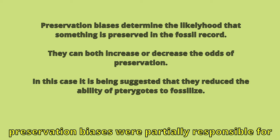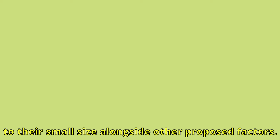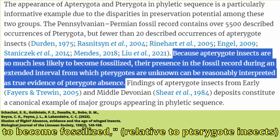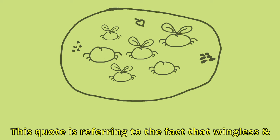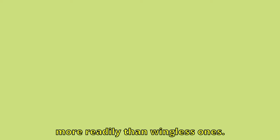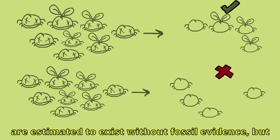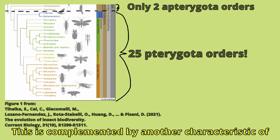For example, it was suggested that preservation biases were partially responsible for the time gap, with winged insects not preserving well due to their small size alongside other proposed factors. However, a quote from the paper suggests otherwise: 'Because Apterygote insects are so much less likely to become fossilized relative to Pterygote insects, their presence in the fossil record during an extended interval from which Pterygotes are unknown can be reasonably interpreted as true evidence of Pterygote absence.' This quote refers to the fact that wingless and winged insects are found preserved in the same areas, and it is known that winged insects fossilize much more readily than wingless ones. Therefore, an absence of Pterygotes from the fossil record, especially during the period in which they are estimated to exist without fossil evidence, but a presence of Apterygotes, suggests a complete lack of them in the environment at the time.